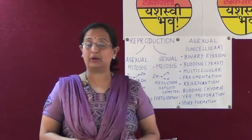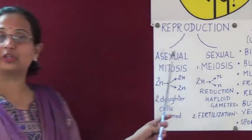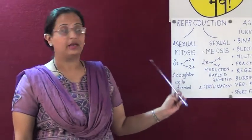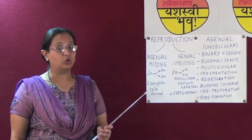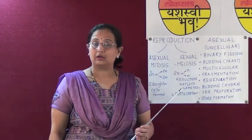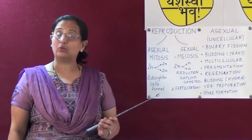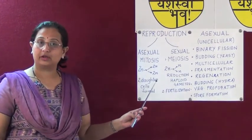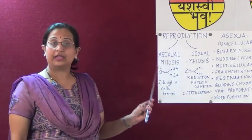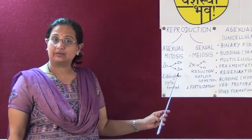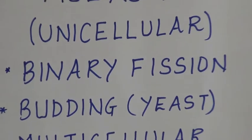Today we are going to study about the modes of reproduction. The modes of reproduction are asexual reproduction and sexual reproduction. We shall discuss asexual reproduction in detail. In asexual reproduction, there is no union of male and female gametes. Only one parent is involved, so the chromosomal number remains unchanged, represented as 2N. The parental cell gives rise to daughter cells which also have the same chromosomal number.